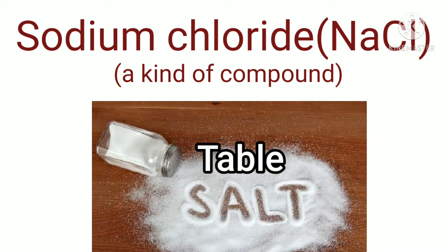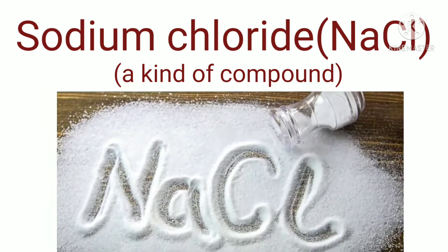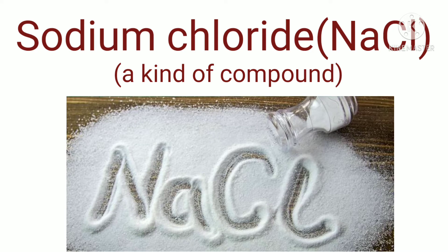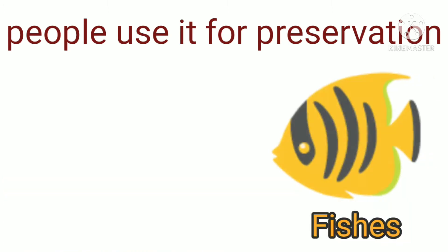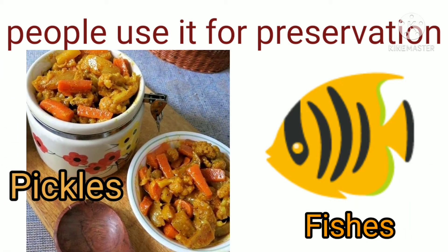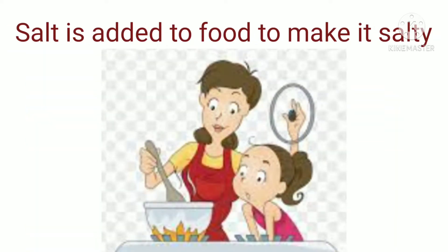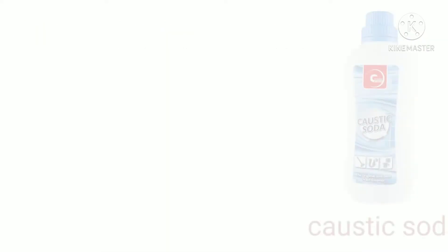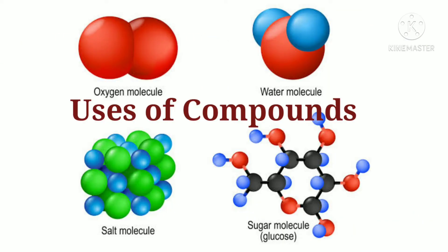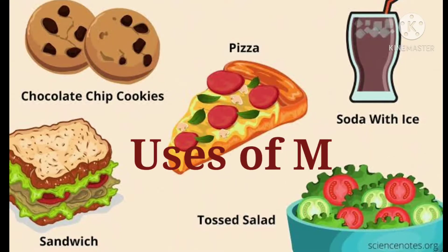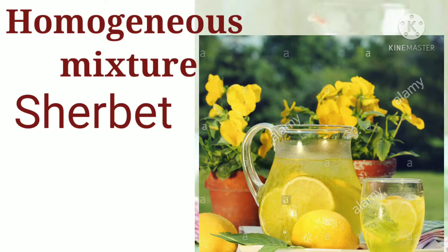Aur phir hai table salt. Ye compound jo hai, isme sodium aur chlorine atoms — elements jo hain — wo combine hokar sodium chloride banate hain. Isko preservation ke liye bhi use kiya jata hai. Isko zyadatar khaane mein namkeen flavor dene ke liye use kiya jata hai.